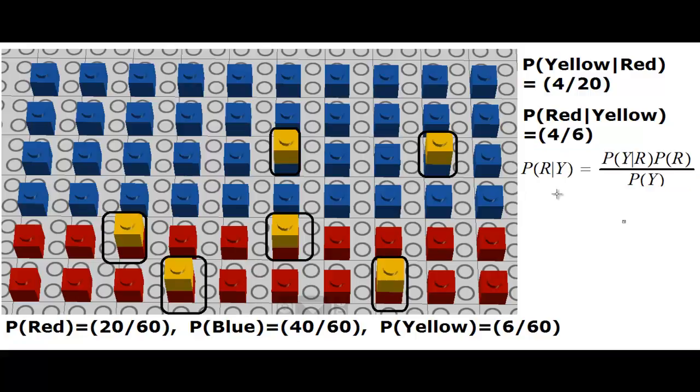So the Bayes theorem will tell us as an equation: probability of red given yellow is probability of yellow given red times the probability of red divided by the probability of Y.